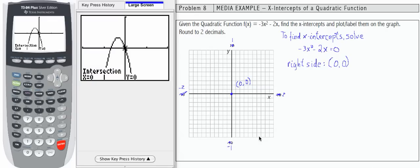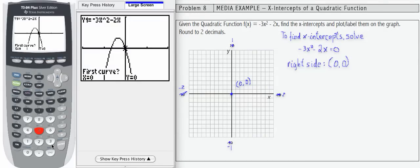Now we need to find the left side, this one, the left side x-intercept. We're going to use our same process, second calc number 5. But now when it asks me for the first curve, if I continue, I'm going to find the same intersect.